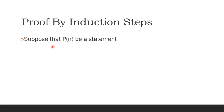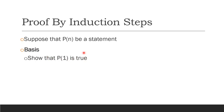Suppose that P of N is a statement. We need to prove that statement P of N is true. The first step is the basis: make sure that P of 1 is true. P of 1 is the basis — this corresponds to the first rung of the ladder.